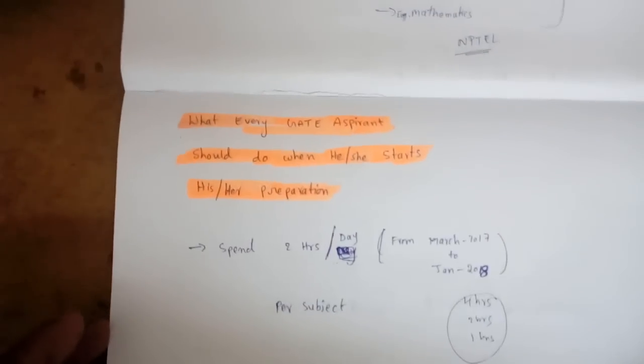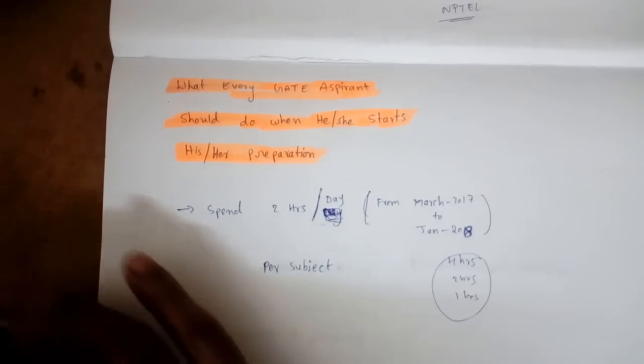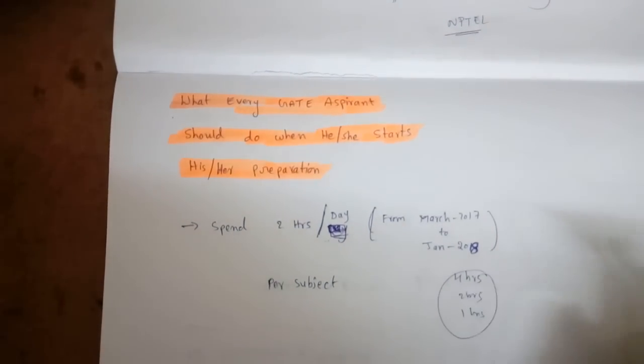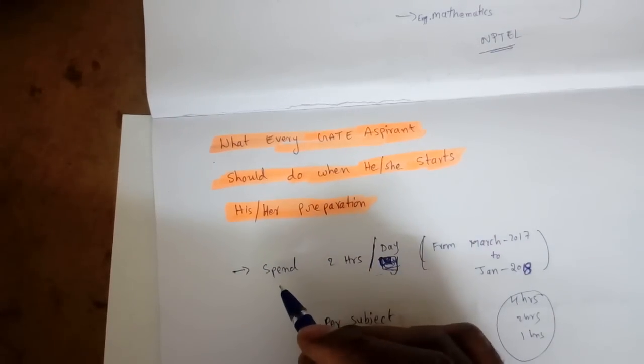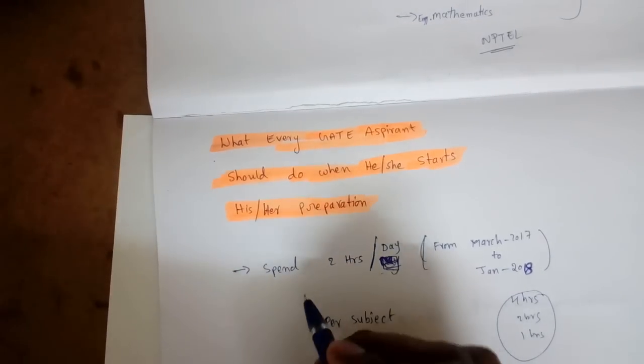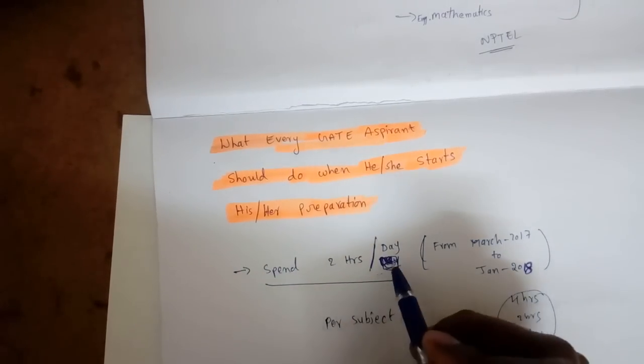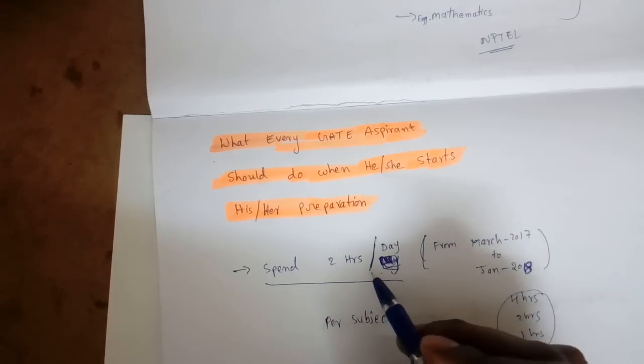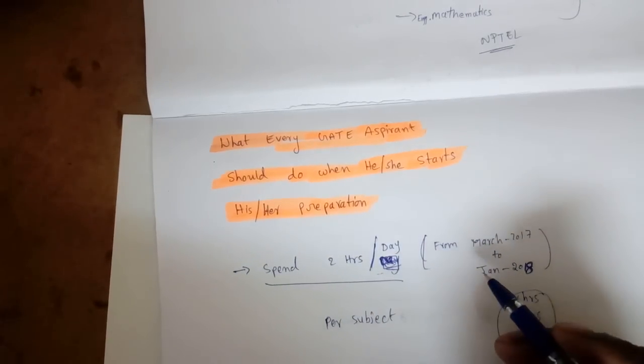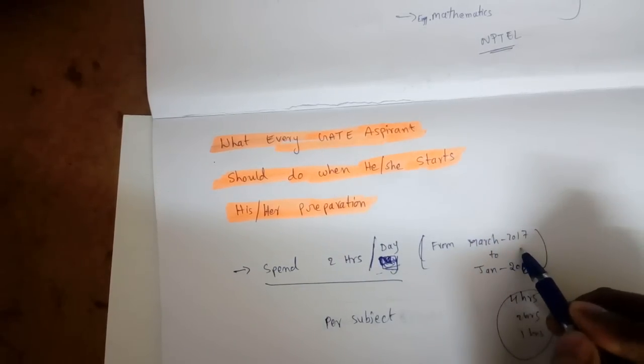Good morning everyone. In this lecture I'm going to give some insight for GATE students. What every GATE aspirant should do when he or she starts preparation. First thing is you have to spend two hours per day. Initially you can spend two hours per day and slowly increase, but when you spend continuously two hours per day from March 2017 to January 2018.